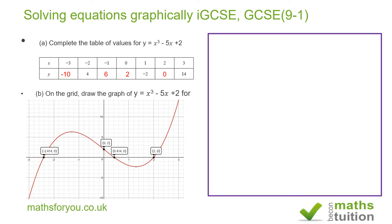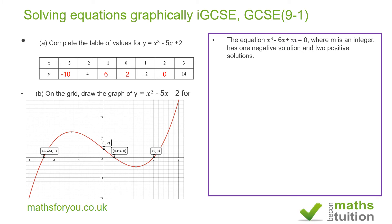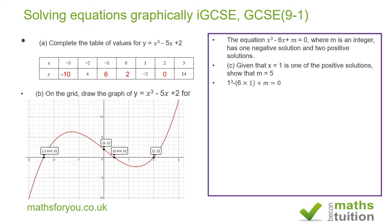Moving on, the equation x³ - 6x + m = 0, where m is an integer, has one negative solution and two positive solutions. One of the solutions is x = 1; show that m = 5. I substitute x = 1 into x³ - 6x + m = 0, which gives 1 - 6 + m = 0, so -5 + m = 0. Adding 5 to both sides gives m = 5, as expected.